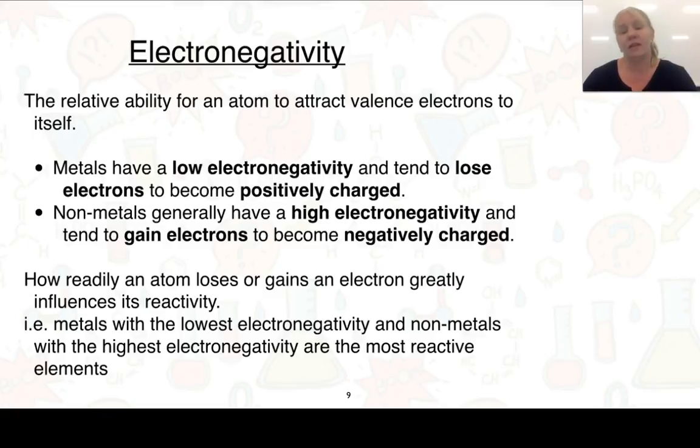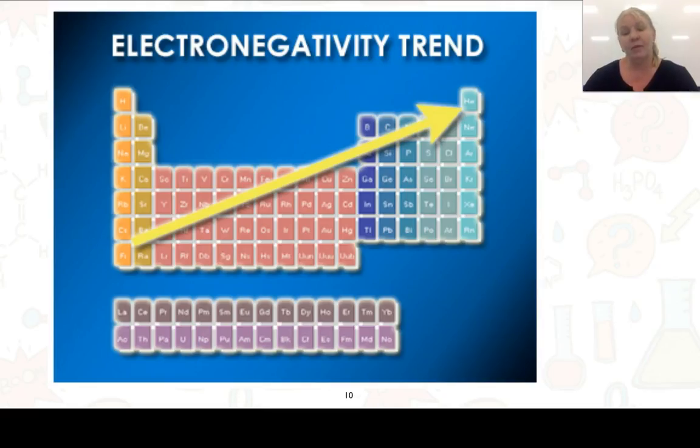Electronegativity is the relative ability for an atom to attract valence electrons. Metals generally have low electronegativity because they lose their electrons and become positively charged. Non-metals generally have a higher electronegativity because they gain electrons to become negatively charged. How readily an atom loses or gains an electron greatly influences its reactivity. So metals with the lowest electronegativity and non-metals with the highest electronegativity are going to be our most reactive elements. Here's how we could determine and show on the periodic table the electronegativity trend. Just make sure that it doesn't go into group 8.